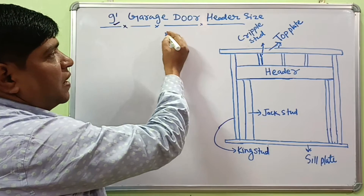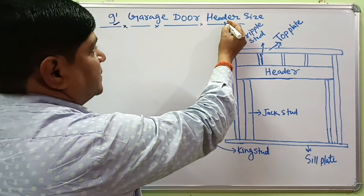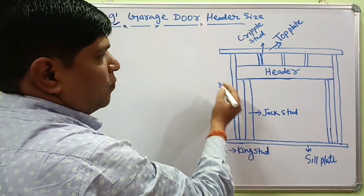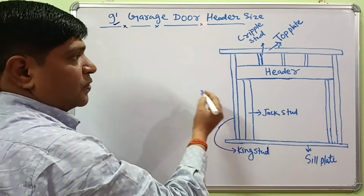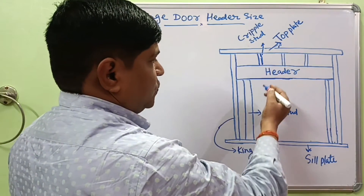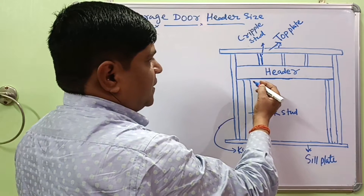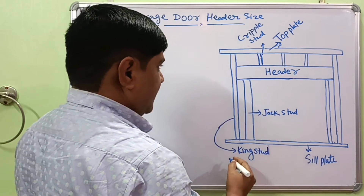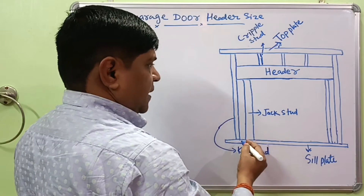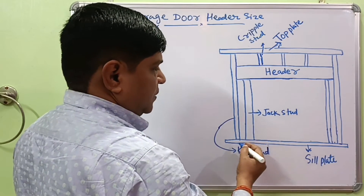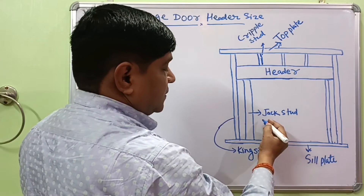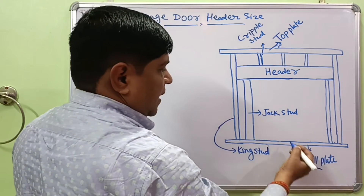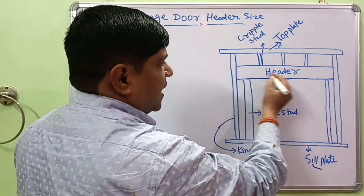In this video we have to find out the correct header size for a 9 foot garage door and what will be the rough opening for a 9 foot garage door. Here in the diagram, in most European countries and the United States, houses are made of wooden frame structure. Here is the wooden frame house of a garage. This is the bottom plate, known as the seal plate, and this one is the header.